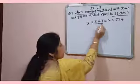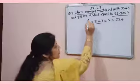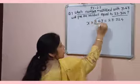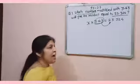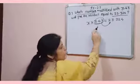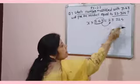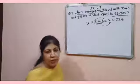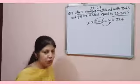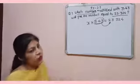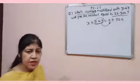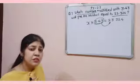Now for finding the value of X, you have to shift 3.43 towards right hand side and it is multiplied by X. So when you shift it, it will be divided by 23.324. You know very well, when a number is shifted from one side to another, its basic operation will change.